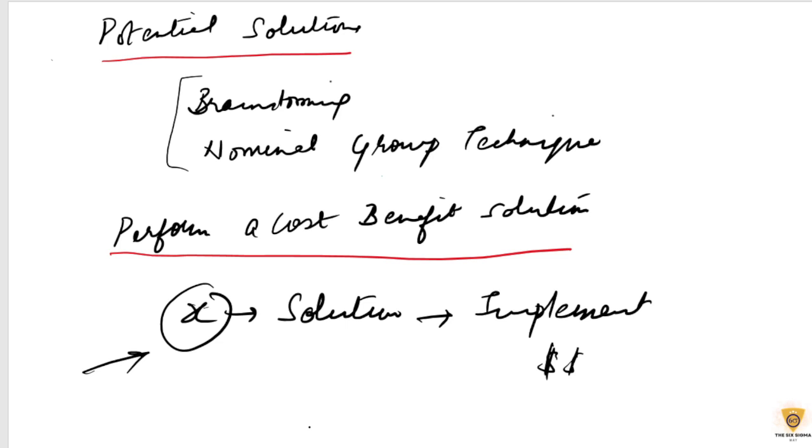To conclude today's session, the Analyze phase of DMAIC is essential in problem solving using the four steps that I highlighted: validating the measurement system, determining the root cause, identifying the potential solutions, and performing the cost-benefit analysis. These were the four steps that we discussed.